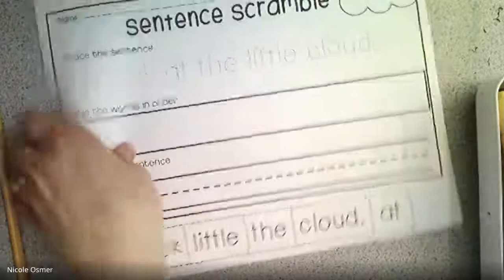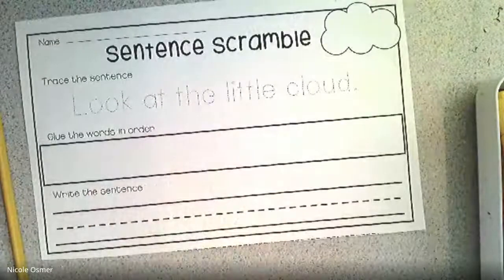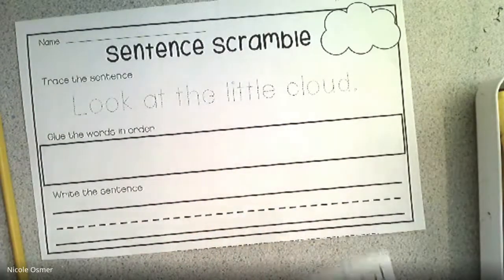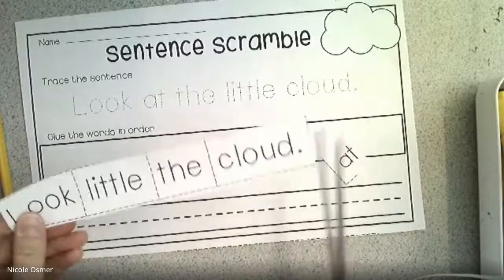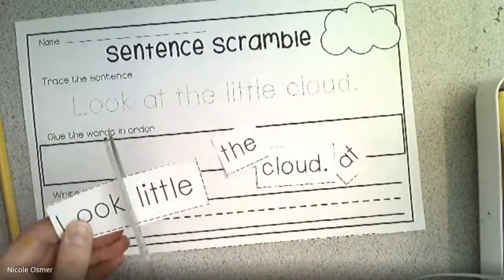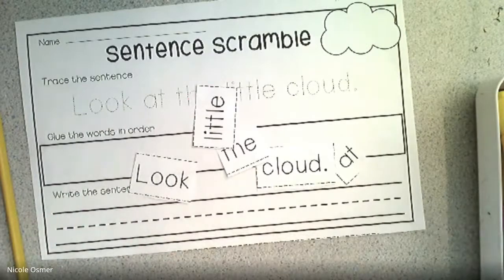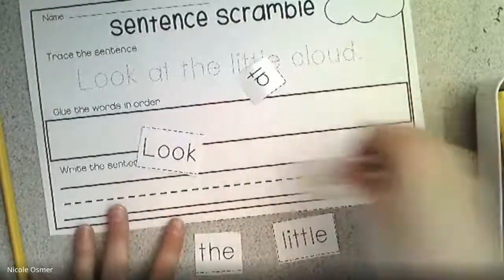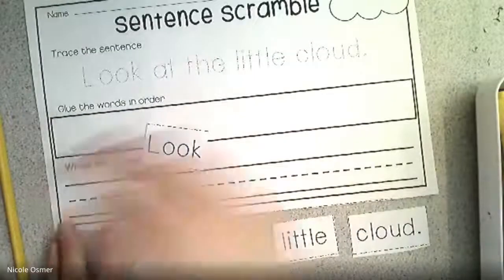The next activity — just to make sure everybody knows what to do — is another sentence scramble. You'll cut out your word tiles and write on the dotted lines once again. I like to count them: one, two, three, four, five. Five words again. This time it doesn't have the boxes like yesterday, so we're going to have to put them in order and find the one that goes first and the one that goes last. Which one starts with the uppercase letter?